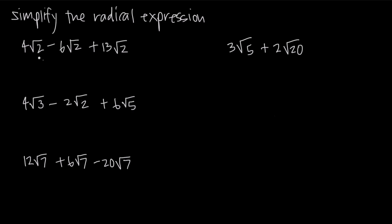In this first example, we have 4 times the square root of 2, minus 6 times the square root of 2, plus 13 times the square root of 2. We're just dealing with addition and subtraction — no multiplication or division. When you have addition and subtraction of square root signs, what you're looking for is like terms: you're looking for the square roots to be the same. If the square roots are the same, you can combine the terms as like terms.